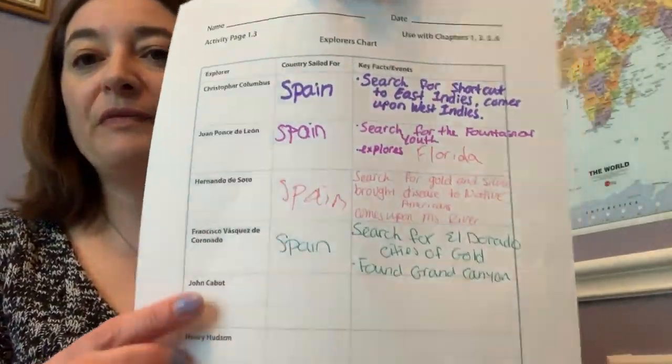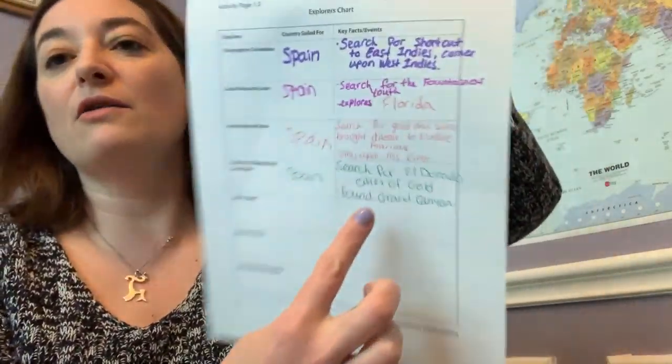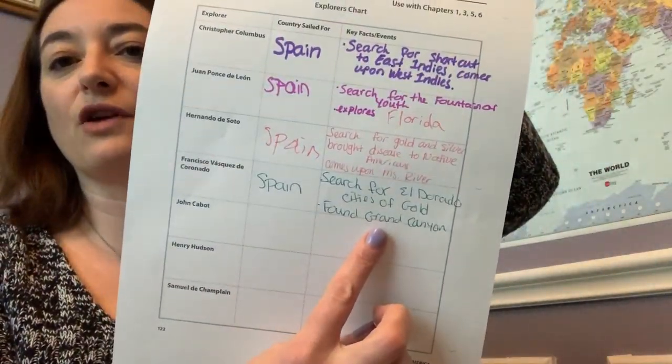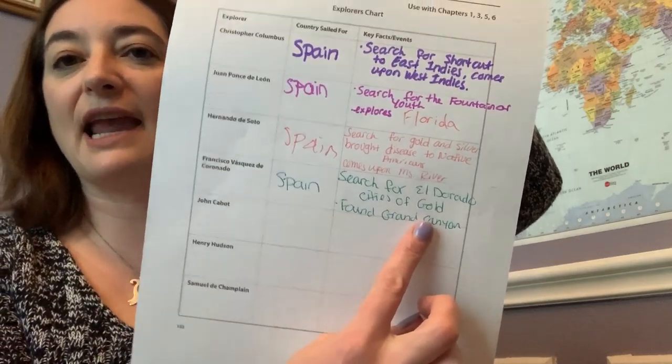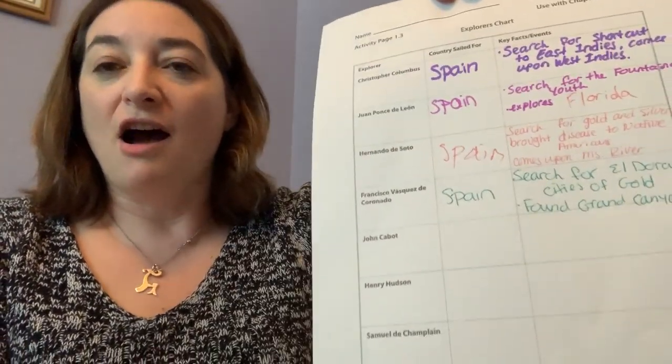I asked you yesterday to go ahead and get your explorers chart out, because today we are going to put on Francisco Vasquez de Coronado. He was from Spain and he searched for El Dorado and cities of gold, and he also found the Grand Canyon, so go ahead and make sure that you put that down on your explorers chart.